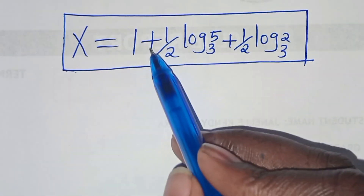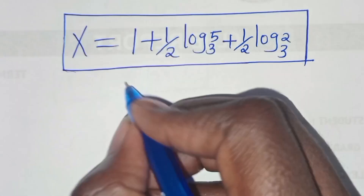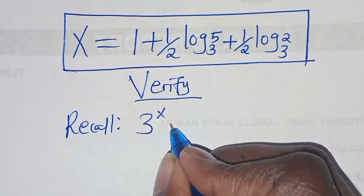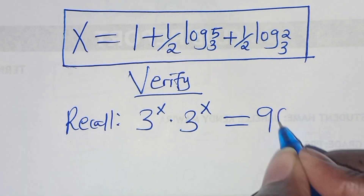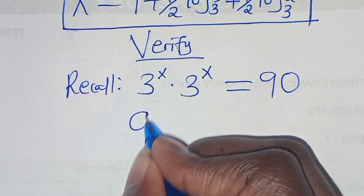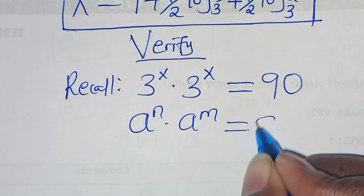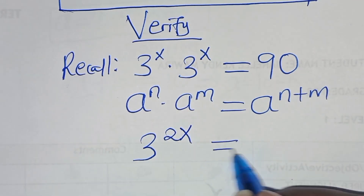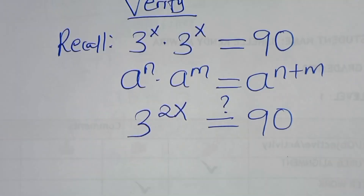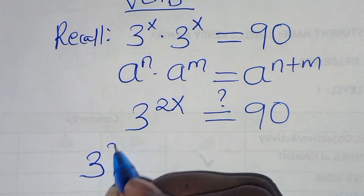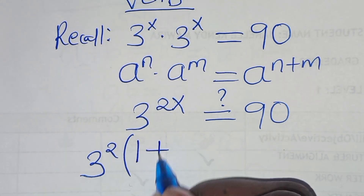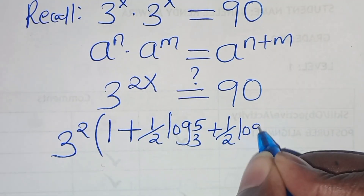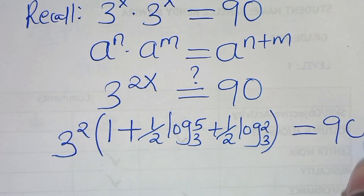Then plus here we have one half log base 3 of 2. So now we have the value of x as 1 plus one half log base 3 of 5 plus one half log base 3 of 2. The next step is to verify. If you recall, we need 3 to the power of x times 3 to the power of x to give us a value of 90. This exponential equation is in the form of a to the power of n times a to the power of m, which equals a to the power of n plus m, so we have 3 raised to the power of 2x equal to 90. Substituting x, this implies we have 3 to the power of 2 times (1 plus one half log base 3 of 5 plus one half log base 3 of 2), which should give us 90.